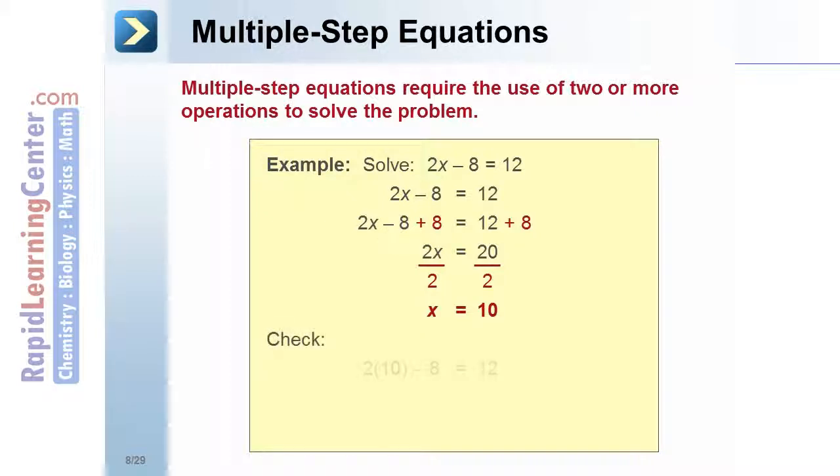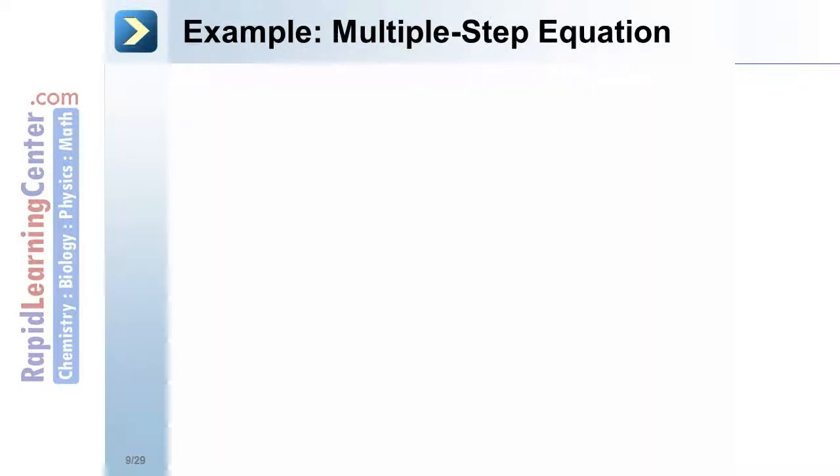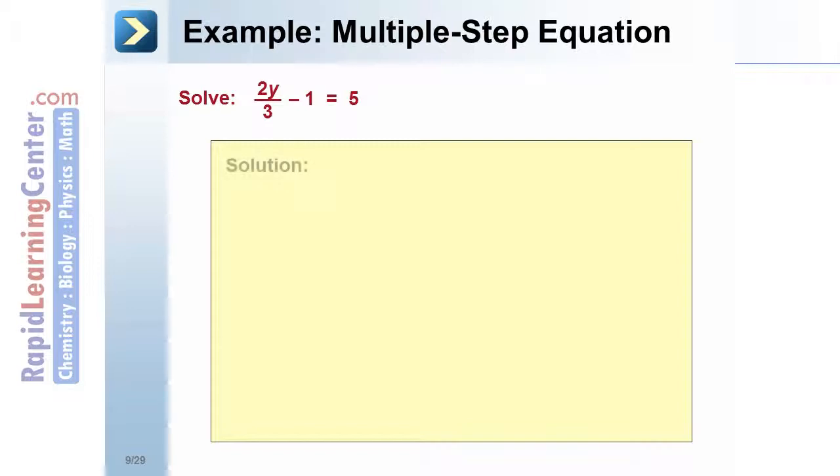Check the solution by substituting 10 back into the original equation. Both sides equal 12, so the solution is verified. Example: Solve 2y/3 - 1 = 5. Solution: Add 1 to both sides to get 2y/3 = 6.